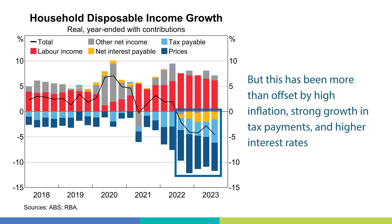However, this growth has been more than offset by broader cost of living pressures that have reduced people's disposable income. These include high inflation (the dark blue bars), strong growth in tax payments (the light blue bars), and higher net interest payments from higher interest rates (the yellow bars). As a result, this has put pressure on household budgets and many households have responded by reducing their spending.